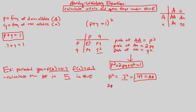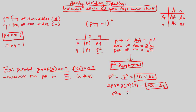Next, 2PQ equals 2 times 0.7 times 0.3, which gives 0.42 — so 42% of individuals are heterozygous, capital A lowercase a. Finally, Q squared equals 0.3 squared, and remember 0.3 squared is 0.09, not 0.9. That 9% represents the homozygous recessive genotype, lowercase a lowercase a.